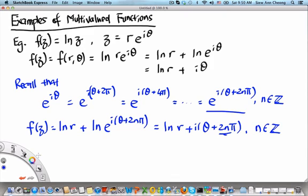What is another example of a multi-valued function that we will encounter frequently in physics? That is the square root function.